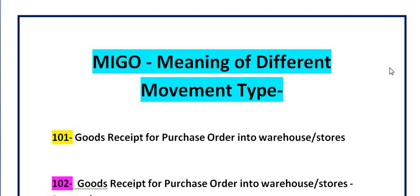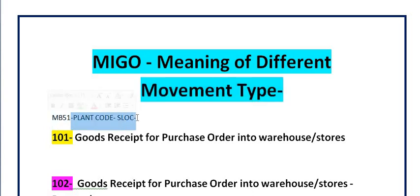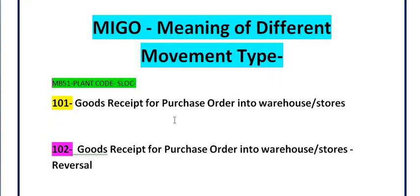Welcome to another class tutorial by My Support Bytes in SAP. Today we are going to discuss the meaning of different movement types we frequently use in SAP. Once we check the material movement history in MB51, entering the plant code and storage location, a list is generated. At that time, you can identify the data and easily track the movement of your goods issue and goods receipt records.